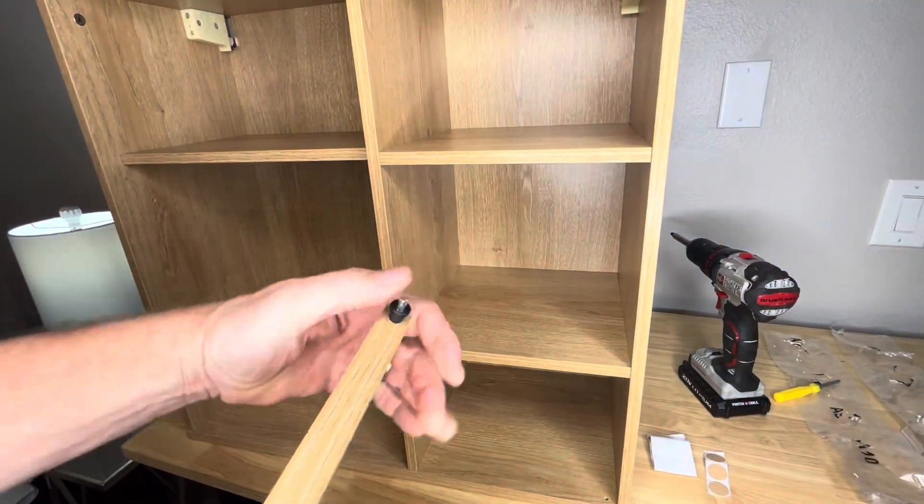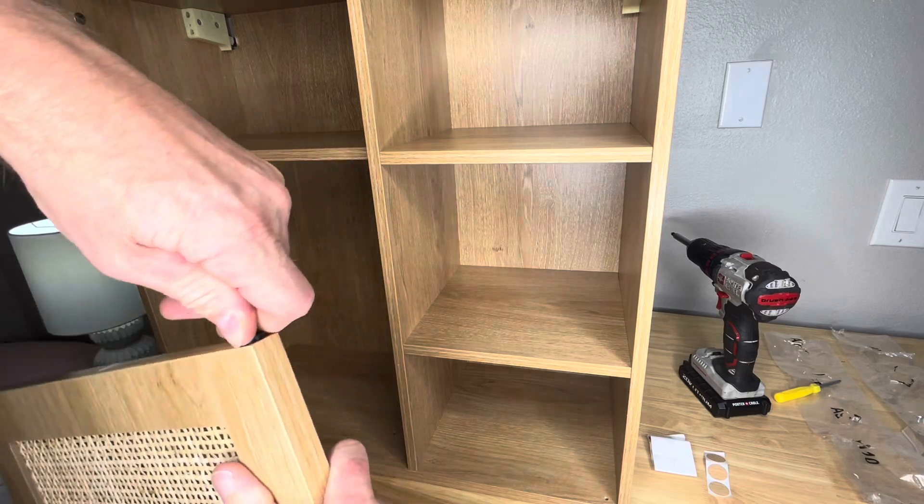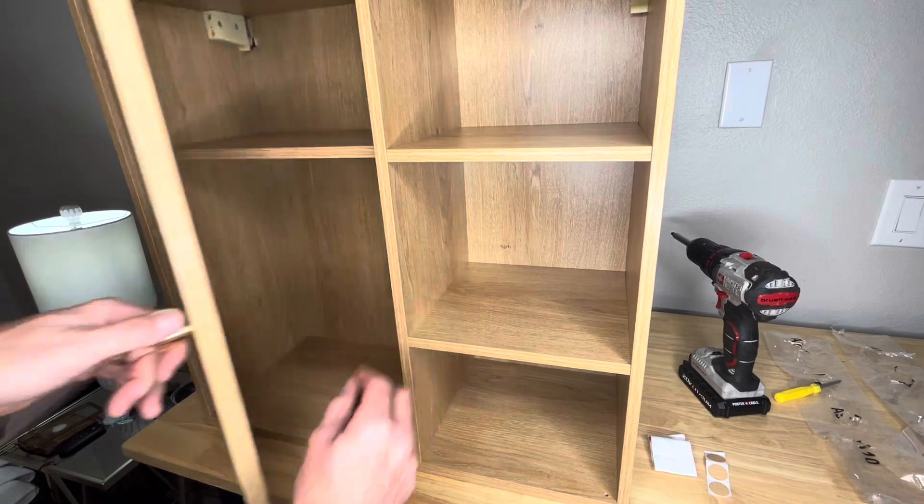So here's the hinges of the door. They're spring loaded. You got one on top and one on bottom and they just slide into the door itself. Then you snap it into the cabinet. Now you have a door.